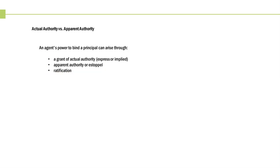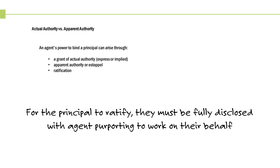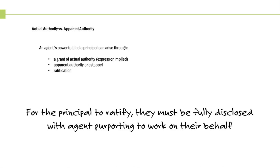Both apparent authority and ratification are only possible if the principal's existence and exact identity is known by the third party. For the principal to ratify, they must be fully disclosed and the agent must have been purporting to work on their behalf. Remember, the agent can't create their own apparent authority — it's similar to apparent authority, except the principal didn't create that perception; the agent is trying to create it for themselves.